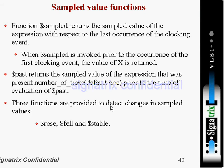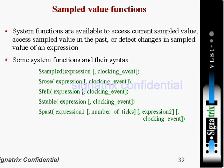The function $sampled returns the sampled value of the expression with respect to the last occurrence of the clock event. When $sampled is invoked prior to the occurrence of the first clocking event, the value of x is returned. Here we are mentioning one clock event — for example, the posedge of clock. Whenever you invoke this system function, it gives the value of the expression at that particular clock event.